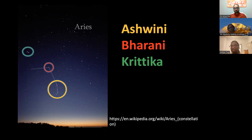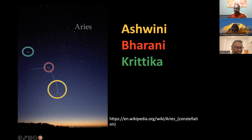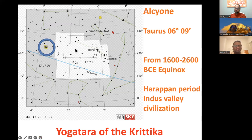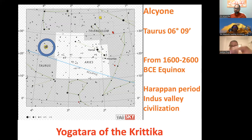Kritika is a very young stellar open cluster — only about 100 million years old — which is very new compared to other star clusters. The yoga tara of Kritika is Alcyone (Alnilam/Elsayon), located at around 6 degrees 9 minutes of Taurus. Kritika nakshatra spans from 26 degrees 40 minutes of Aries to 10 degrees of Taurus, running from the end of Aries into the beginning of Taurus.